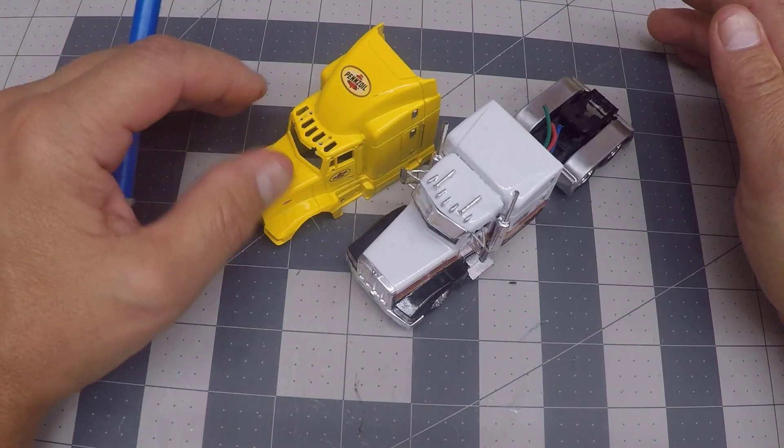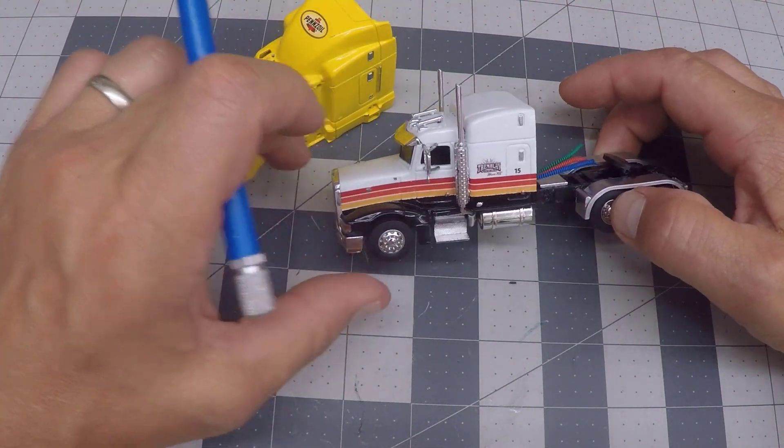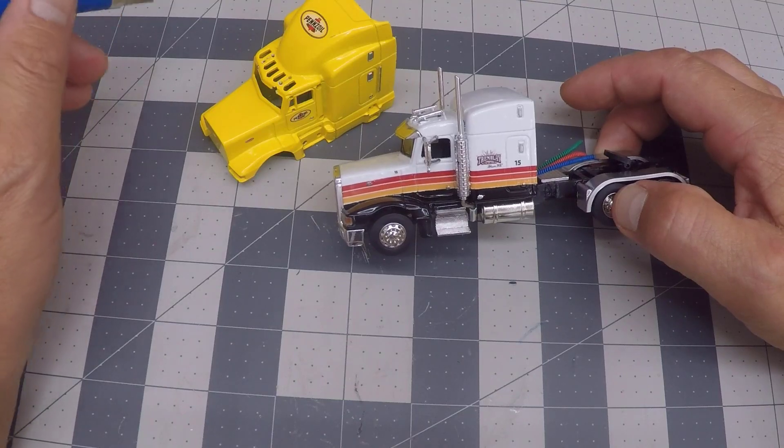And that is the transformation of a Gearbox 377 into Gavin's Family Farms 377 replica. Thanks for watching this episode of How It's Made. I hope you learned something new, and if you have any questions do not hesitate to leave them in the comments. I'm glad to answer anything and help you along the way.